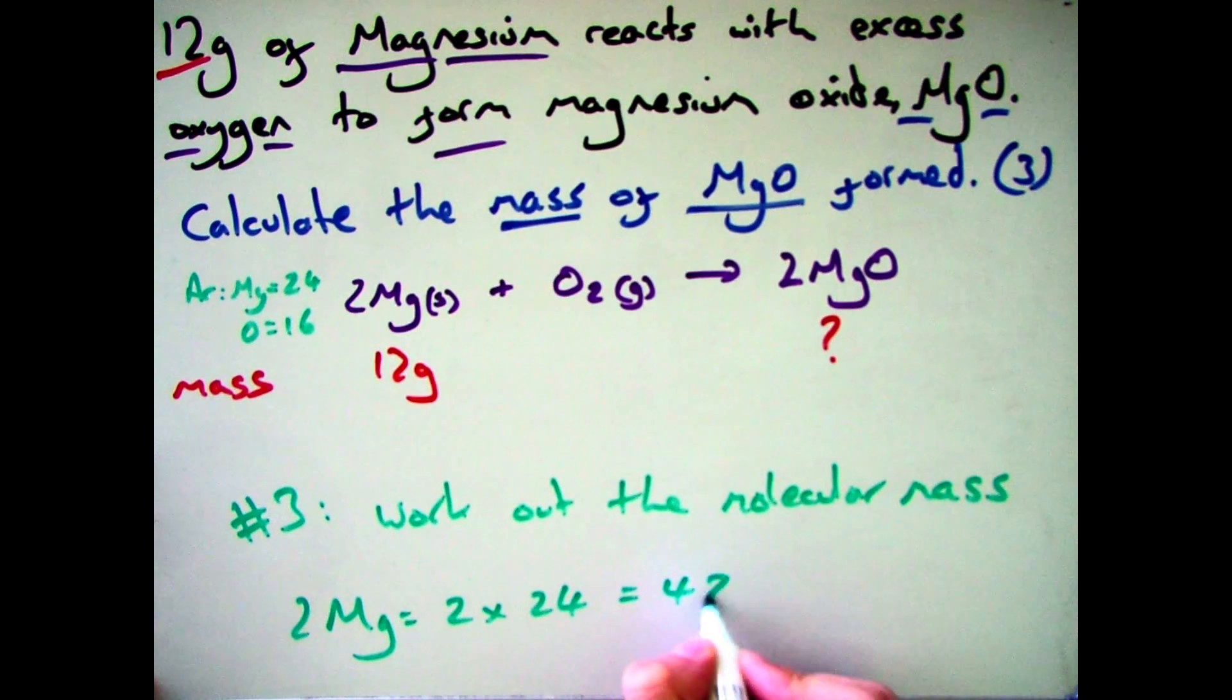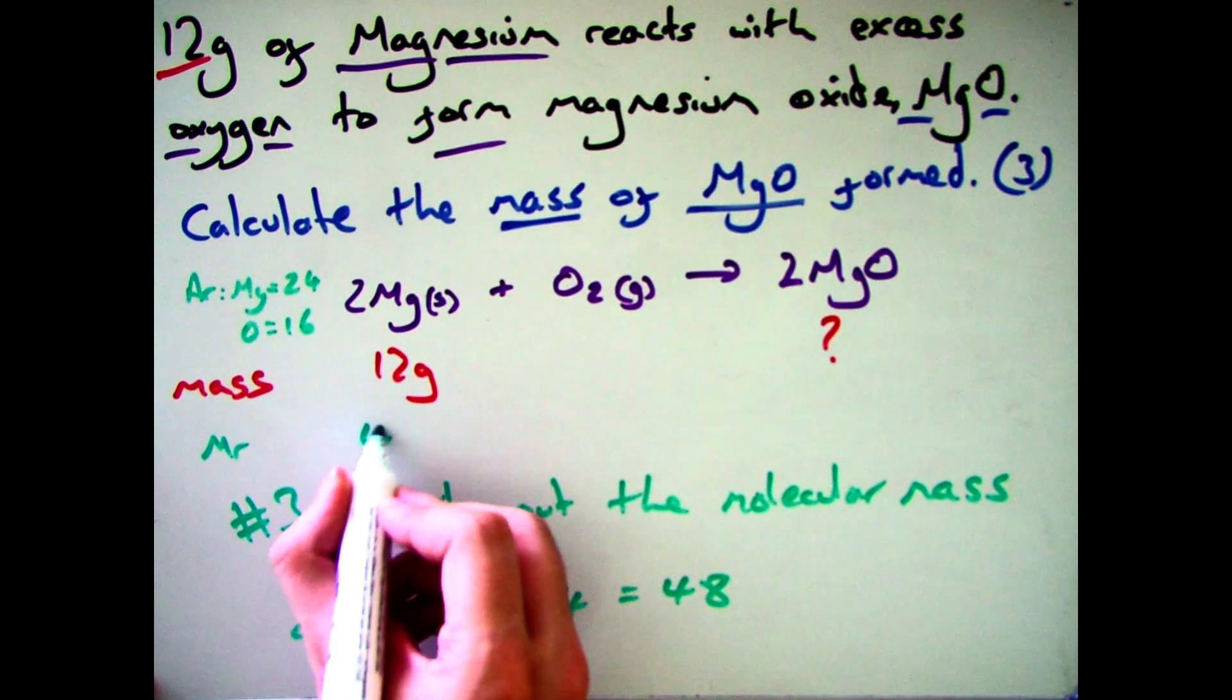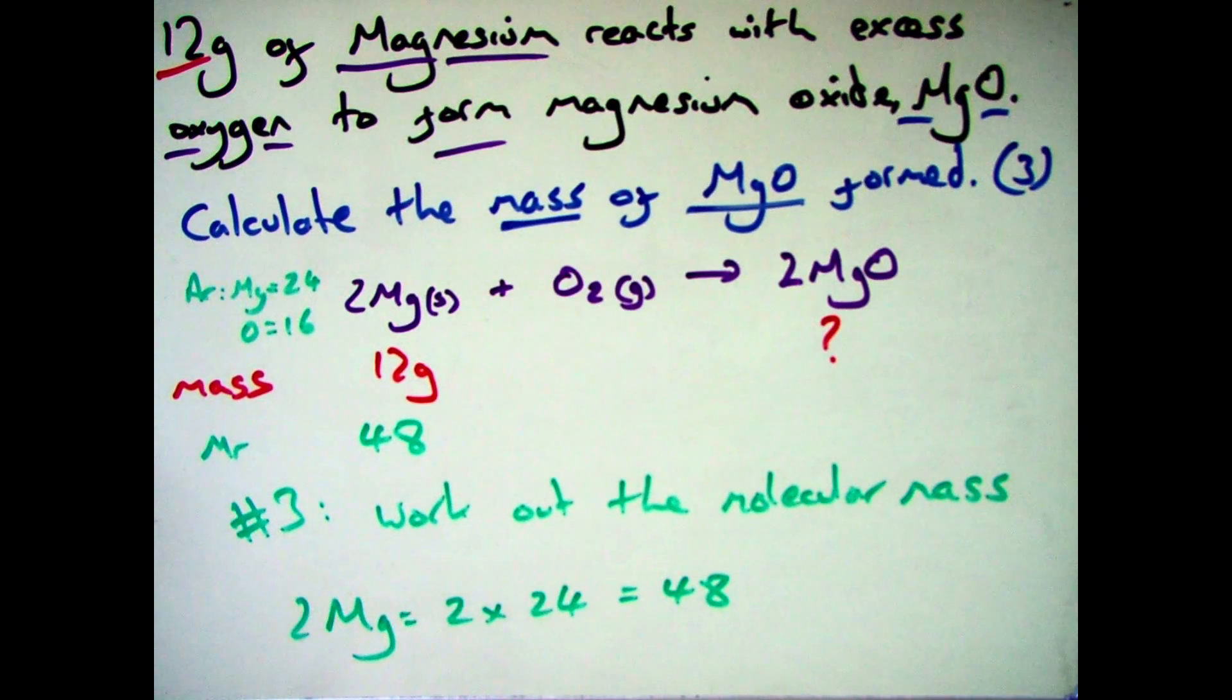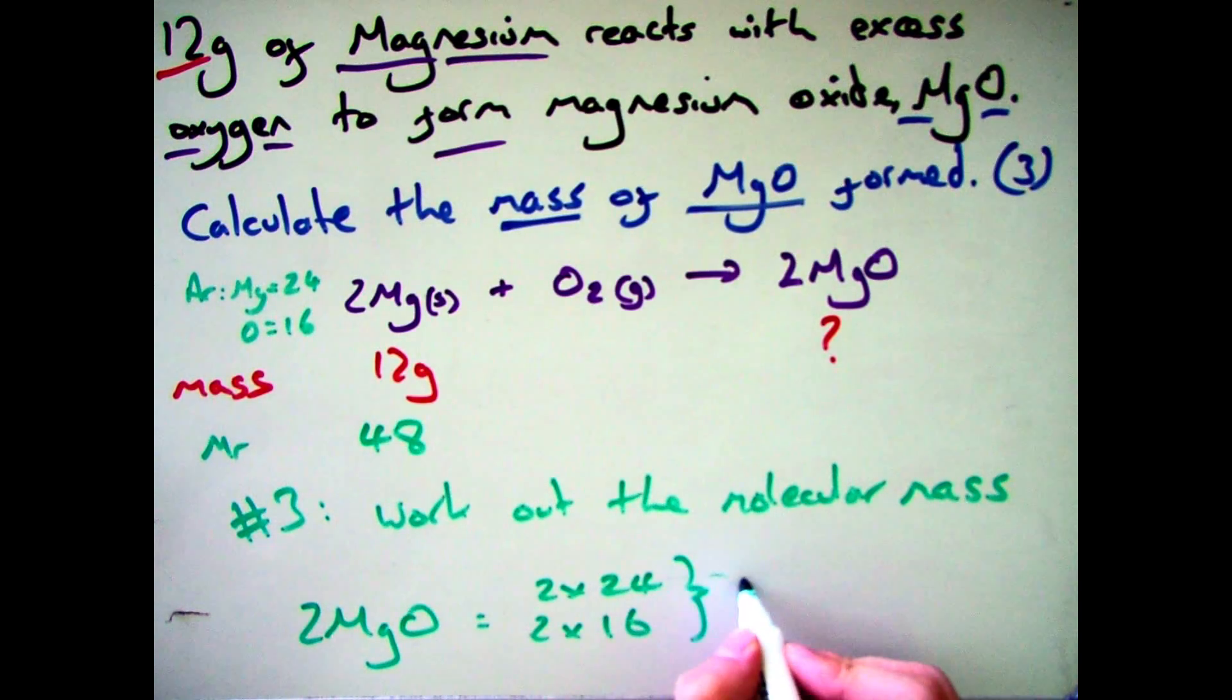So the next thing is to work out the molecular mass. So I have two magnesiums which is two times 24. So my MR of magnesium is 48. I need to do the same with the one that I need which is magnesium oxide. So I've got two magnesiums and I've got two oxygens. So that's two times 24 and two times 16 which gives me 48 plus 32. So my MR for magnesium oxide is 80.